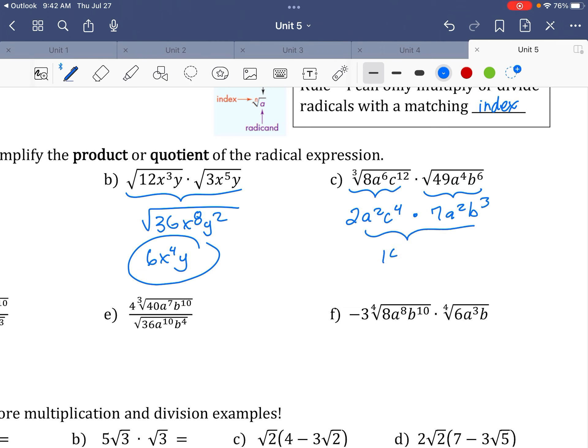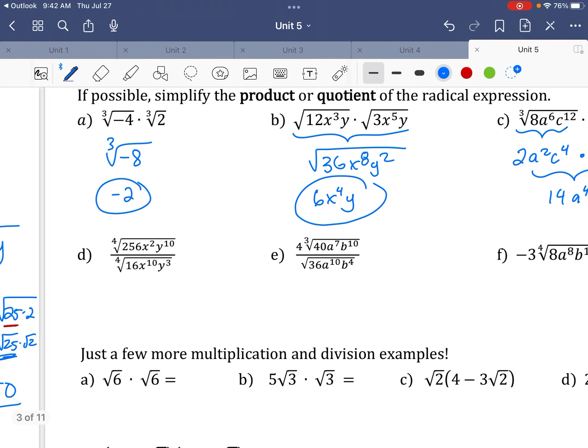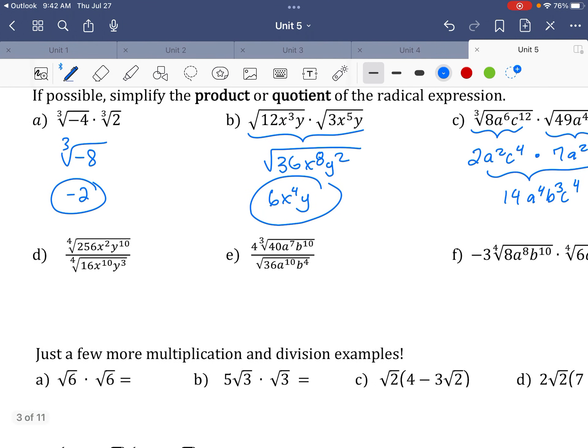Oh, so everything worked out perfectly. So now I can put these together. So that's 14a to the fourth, c to the seventh. Oh, whoops. Sorry. I was putting the C and the B together. They don't go together. So b3, c4, okay?